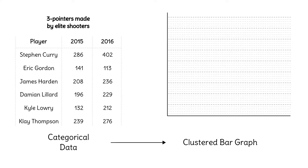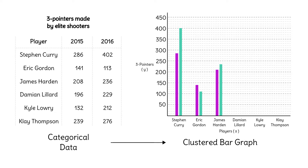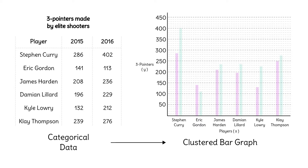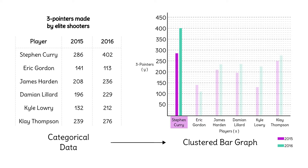First, we put the players on the x-axis, and the number of three-pointers they made on the y-axis. Each player gets a cluster of two bars — the first bar is 2015, the second is 2016. Steph Curry was a lot better than everyone else here over the two seasons.